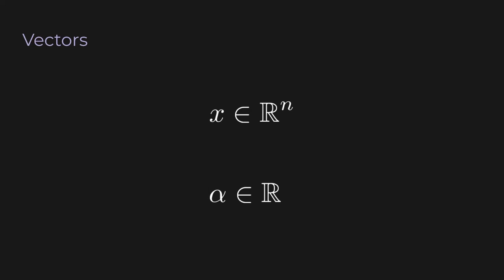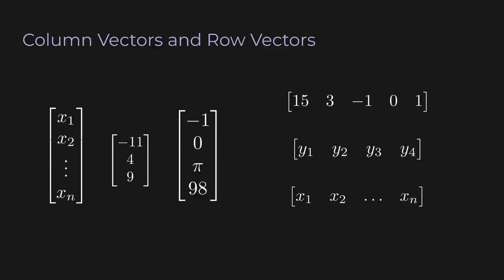We can also write scalars in the same way. So 'alpha in ℝ' means alpha is a scalar. ℝ here is one-dimensional — scalars are one-dimensional — so you can imagine a superscript 1, but we omit it because it's obvious.